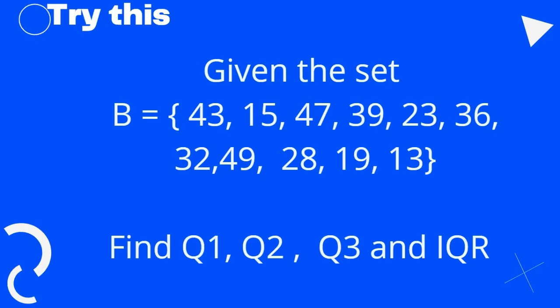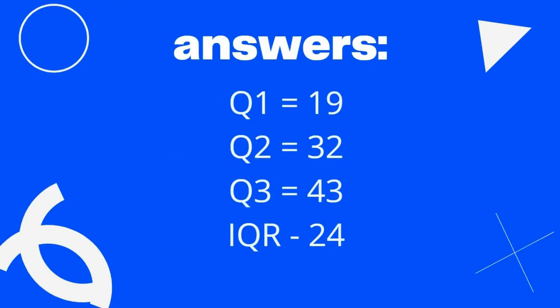You may try this one. Given the set B = {43, 15, 47, 39, 23, 36, 32, 49, 28, 19, 13}, find quartile one, quartile two, quartile three, and the IQR. You may pause this video before you check your answer. The answers are: quartile one is 19, quartile two is 32, quartile three is 43, and IQR is 24.